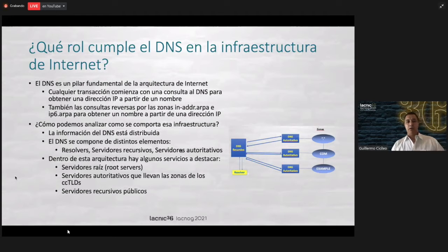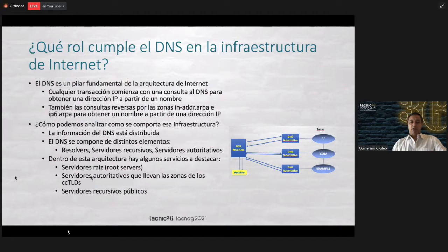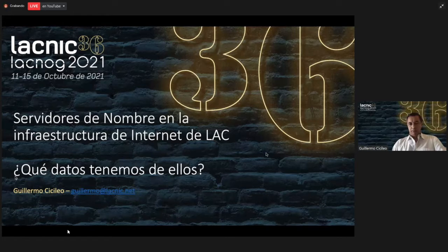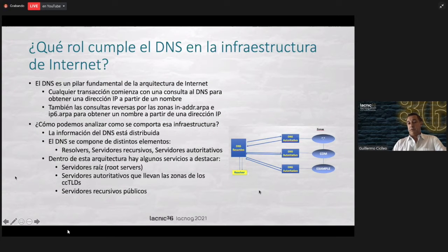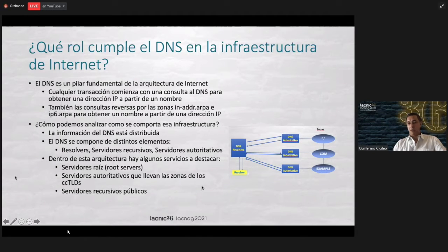How can we analyze how this infrastructure behaves? The DNS information is distributed as an example of a database that is distributed globally. DNS has different components. You have the resolvers that each client has to resolve their names, recursive servers, and authoritative servers. Within this architecture, there are some services that are more important, such as the root servers — the root of the DNS — and then the authoritative servers that handle the zones of the CCTLDs or the TLDs. In our region, we are interested in knowing how the servers are that handle the country domains.